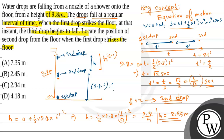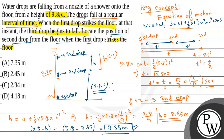We need to find 9.8 minus h, because that is the position of the second drop with respect to the ground. So 9.8 − h = 9.8 − 2.45 = 7.35 meters. This is the position of the second drop from the floor when the first drop strikes the floor. So option (p) is correct: 7.35 meters is the answer. Hope you understand it — best of luck!